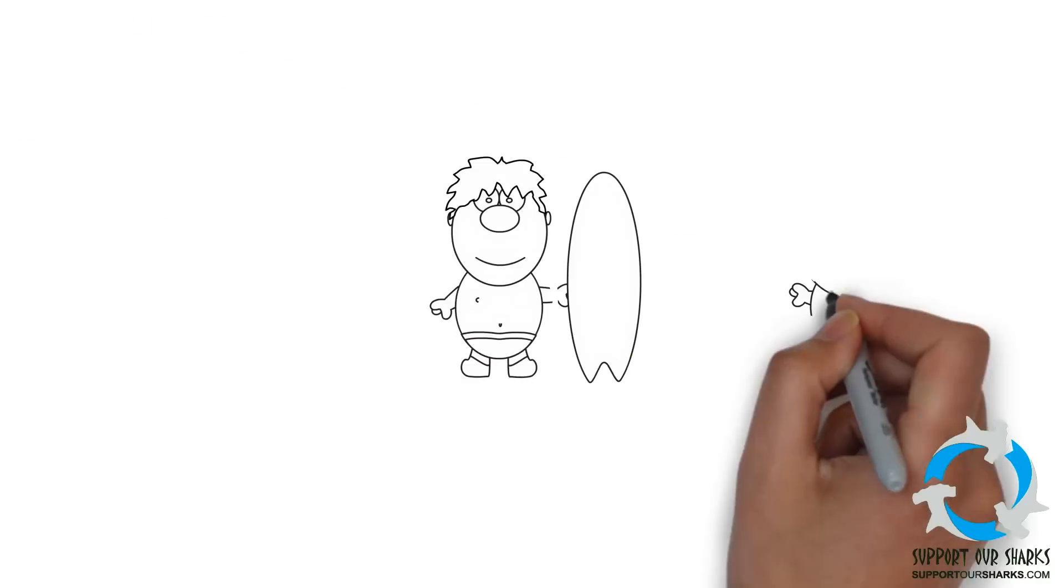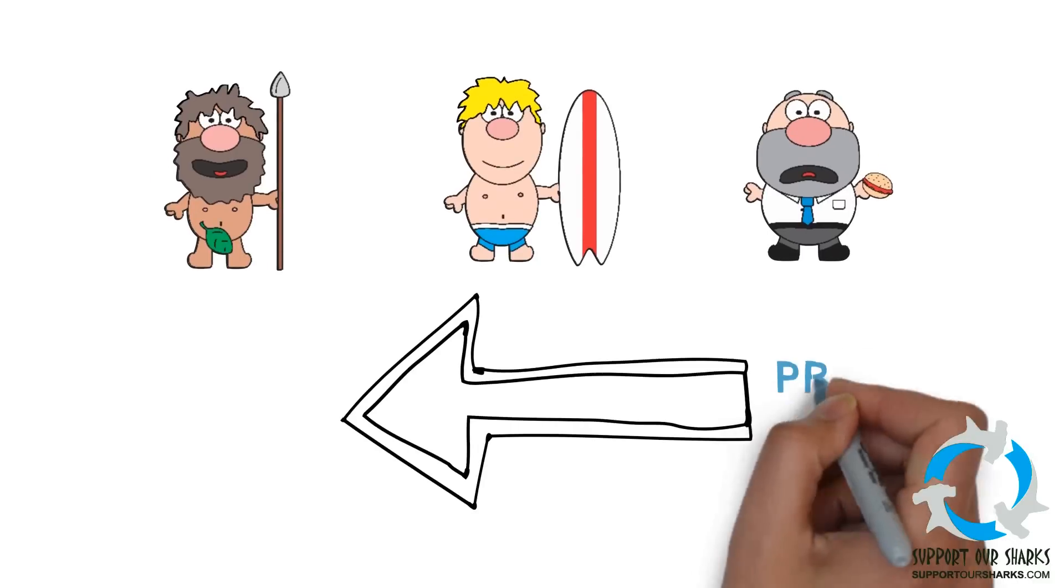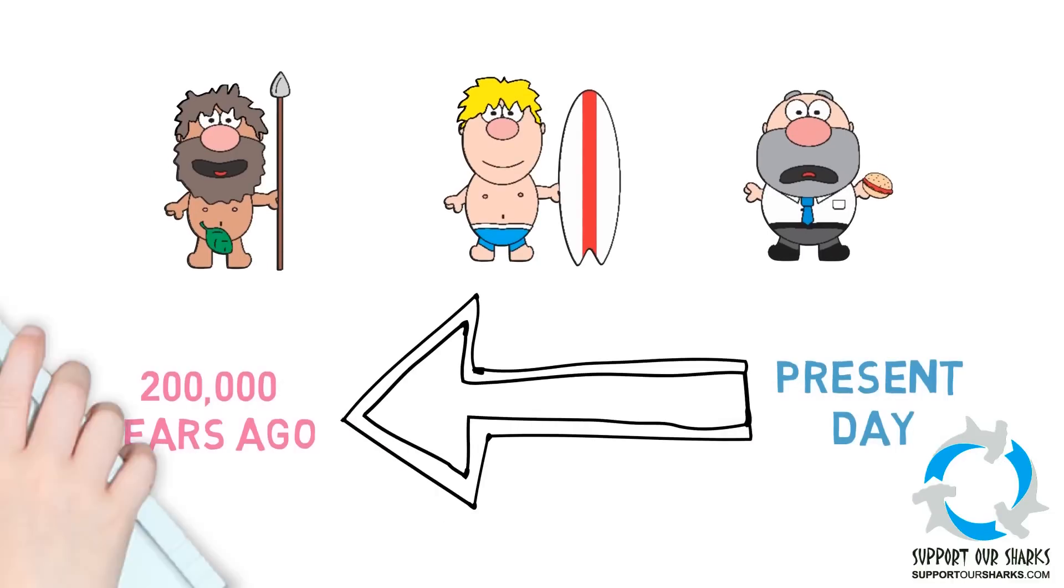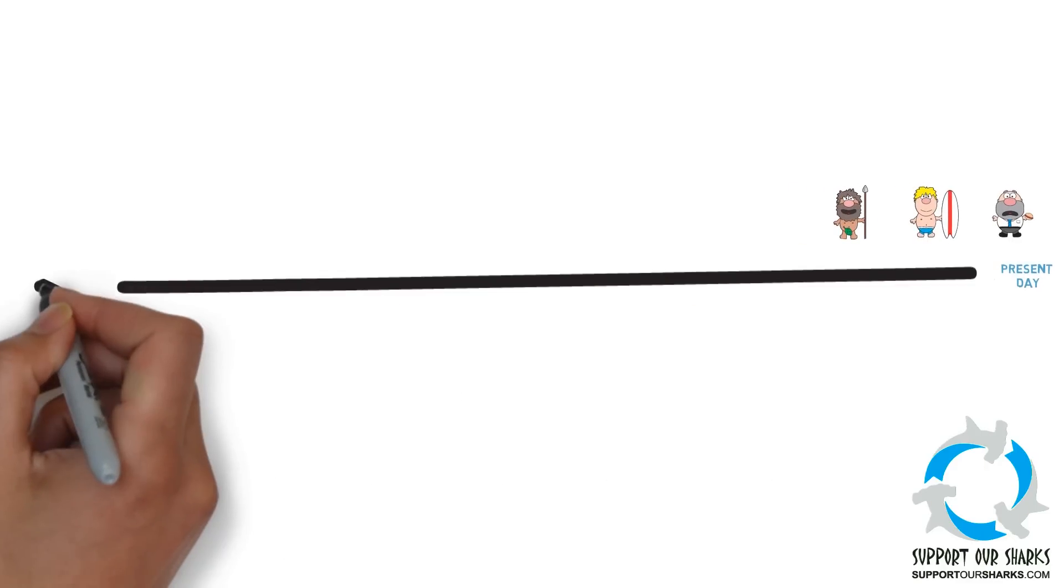To give you some perspective, modern-day humans only date back about 200,000 years. That means that sharks have existed for 200 times longer than modern humans.